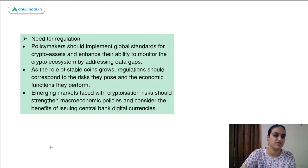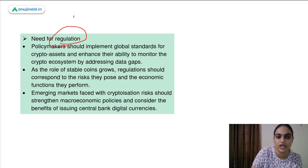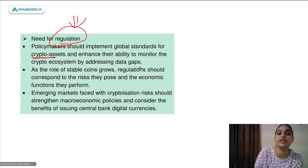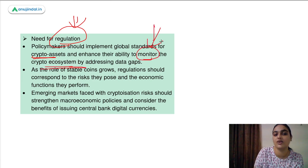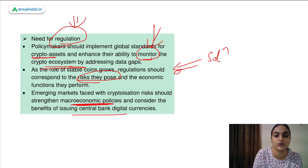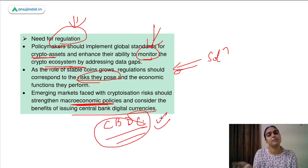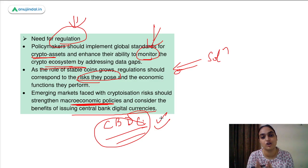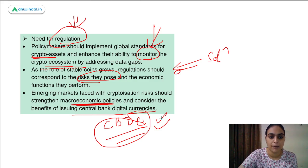Moving ahead, what is the way forward? There is a need for proper rules and regulations to govern this market. Policy makers should implement global standards for crypto assets and enhance the ability to monitor this ecosystem. As the role of stablecoins grows, regulations should correspond to the risks they pose. Emerging markets faced with cryptoization risks should strengthen macro-economic policies and consider the benefits of issuing central bank digital currency (CBDC). Coming back to our question, the answer was stablecoins.